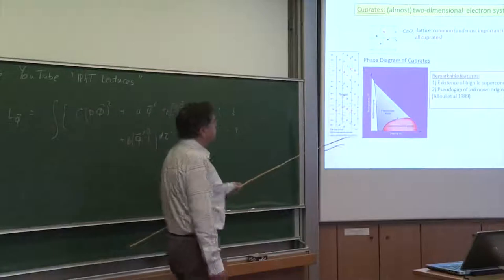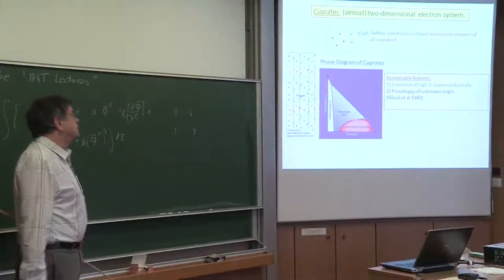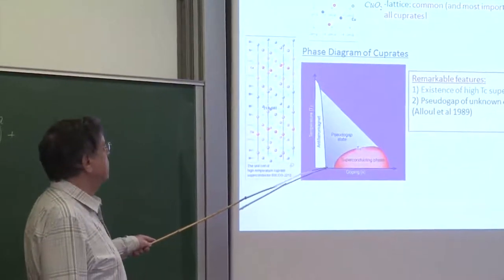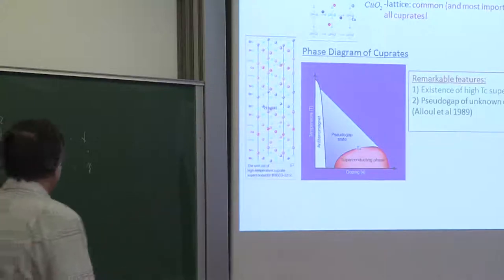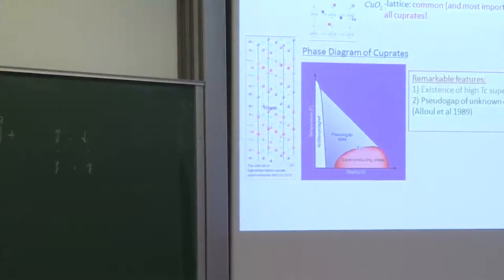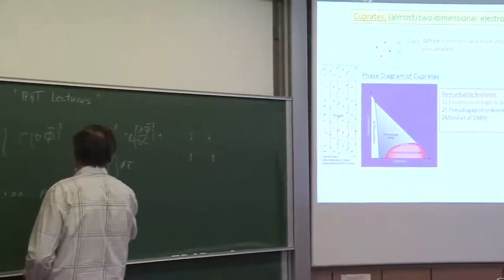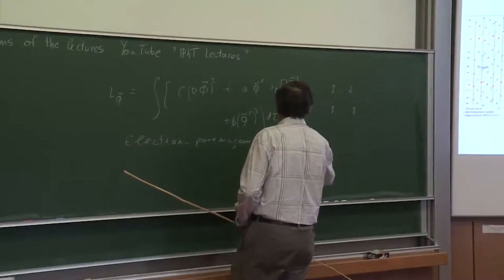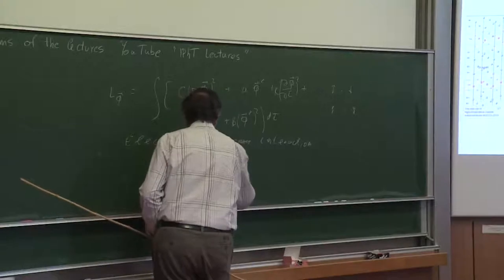There were proposals almost from the beginning that these fluctuations of the antiferromagnetic field can be the source of interaction between electrons, and this is why superconductivity should appear. What people did was use the conventional BCS theory of superconductivity, replacing phonons by paramagnons, so paramagnon-electron interaction leads to so-called D-wave pairing.